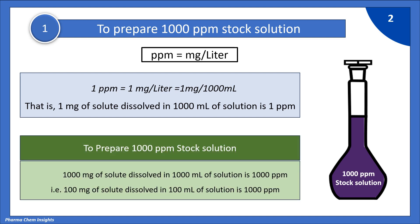To prepare 1000 ppm stock solution, 1000 mg of solute dissolved in 1000 ml of solution is 1000 ppm. That is, 100 mg of solute dissolved in 100 ml of solution is also 1000 ppm. We require only 100 ml for our purpose, so we will prepare in less quantity.